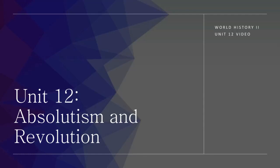Hi and welcome to Unit 12 of U.S. History. This is our second unit in the course. This historical exploration covers the medieval period in Spain and France, and the revolutionary movements that shaped their destinies. In this video, we'll delve into the key characteristics of absolute monarchy, the emergence of revolutionary movements, the American Revolution, and the French Revolution.